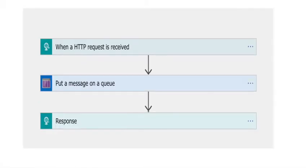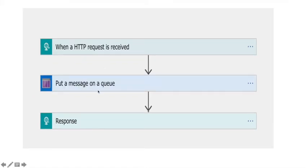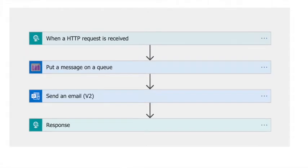In this demo, I will first create one HTTP request that will receive a response. First I'll do GET, then POST. After that I'll add one queue so data goes to queue storage, then I'll add email so data flows from HTTP request via POST to the queue, from queue to email, and from email back to the response. You should have an Outlook.com account — if not, you can create a free one.